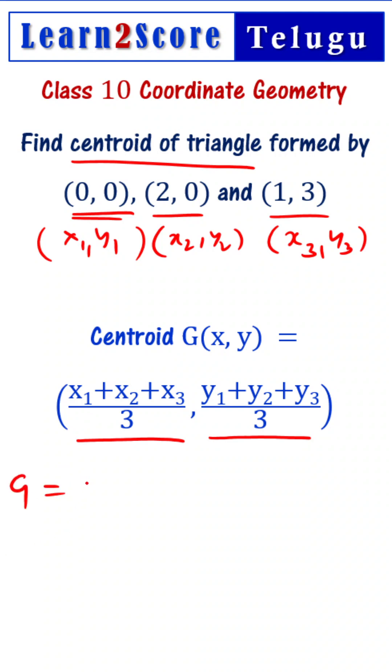The centroid g is now defined as 0 plus 2 plus 1 divided by 3, comma 0 plus 0 plus 3 divided by 3.